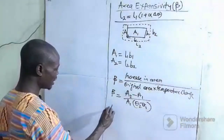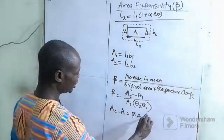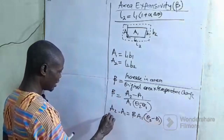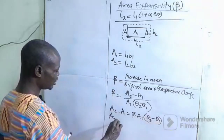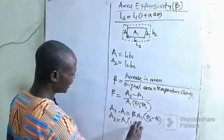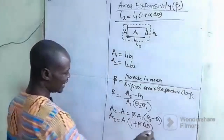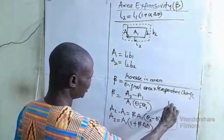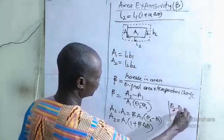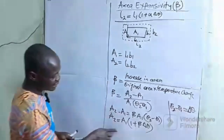Making A2 the subject, we have A2 minus A1 equals A1 times beta times (theta2 minus theta1). And finally, A2 is equal to A1 times the bracket 1 plus beta times the change in theta. This is the expression for the area expansivity.